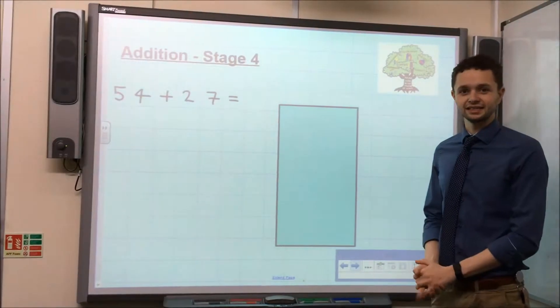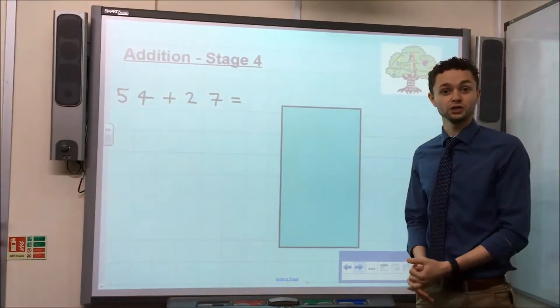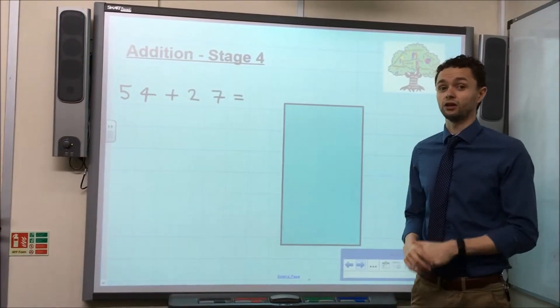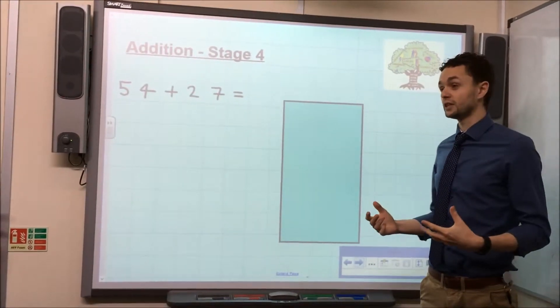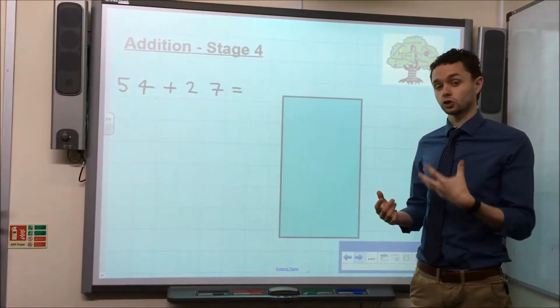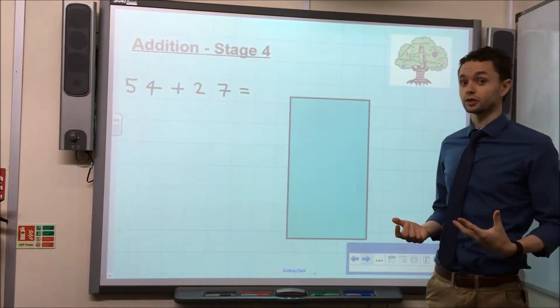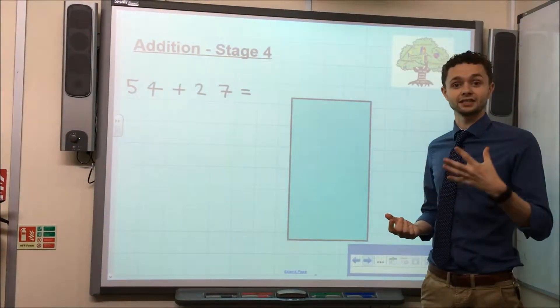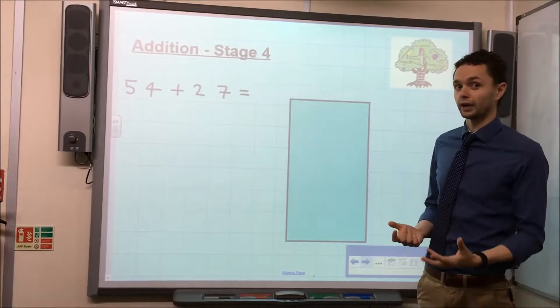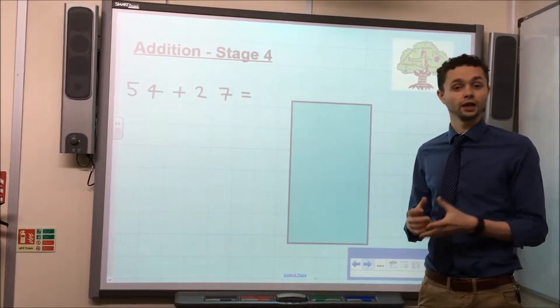Hello everybody, this is addition stage 4, which is a method known as the expanded column method. The main purpose of this method is to provide children with a secure understanding of the place value of numbers, particularly when it comes to addition, before they progress to that standard column method, which we will look at in a later video.